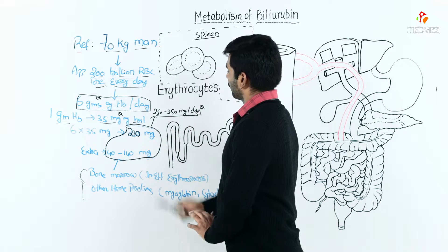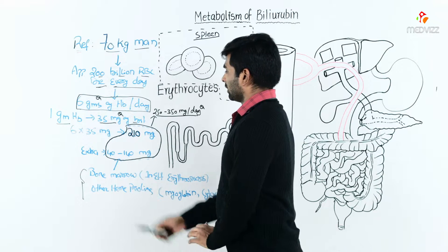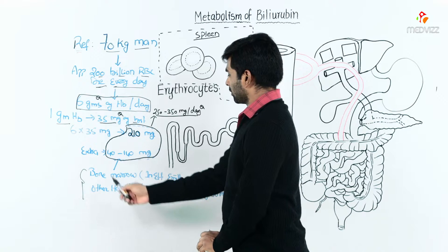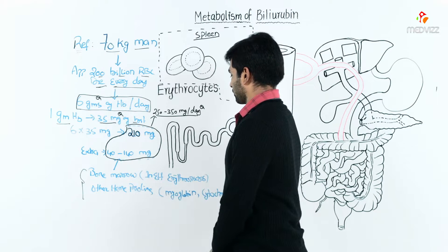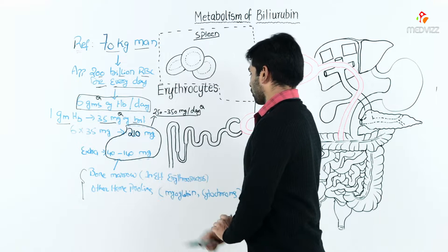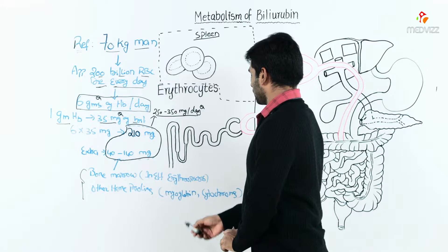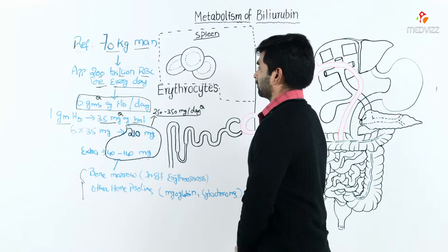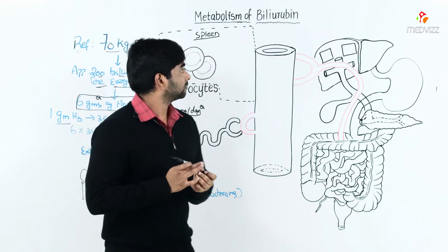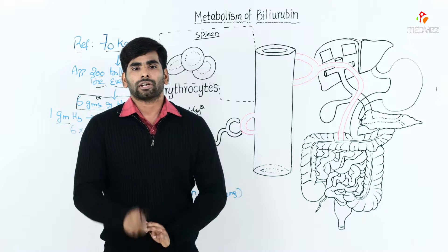The extra bilirubin beyond what RBC breakdown produces comes from bone marrow and other heme proteins. From bone marrow, it is produced through inefficiency of erythropoiesis. Other heme proteins which produce bilirubin are myoglobin and cytochrome C.